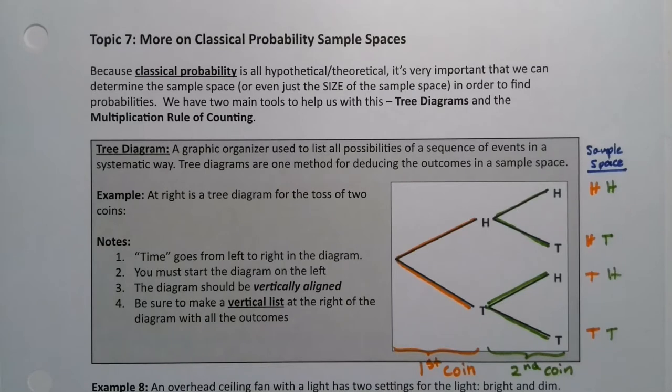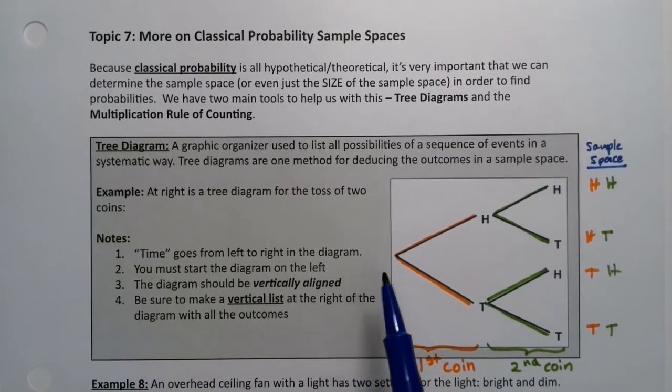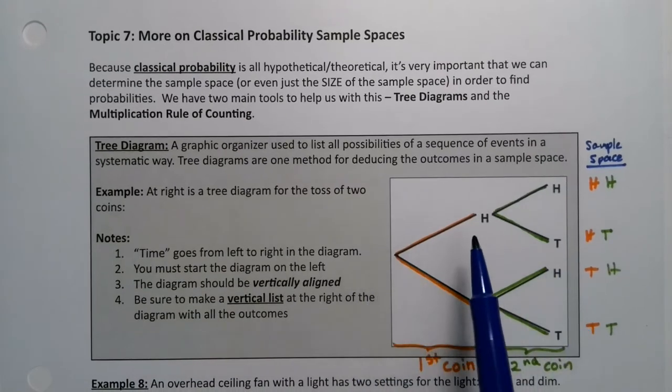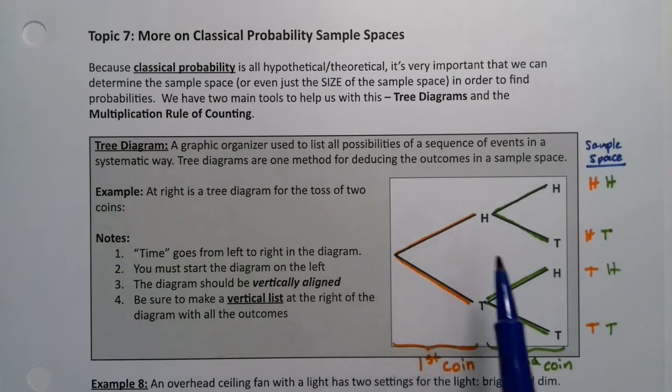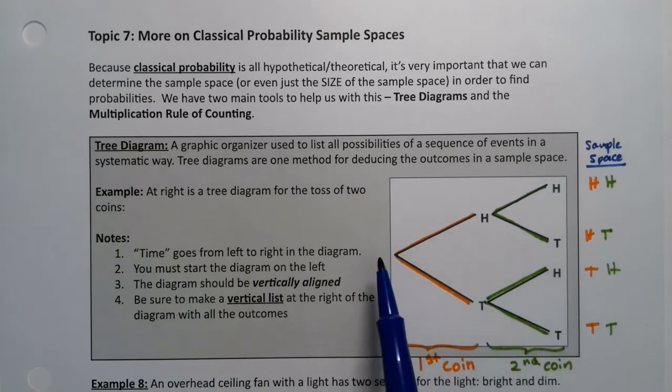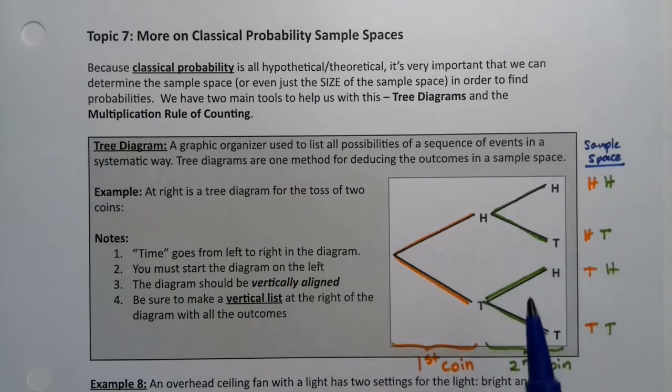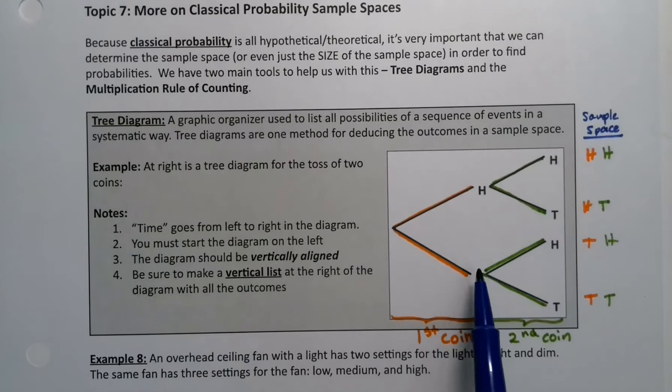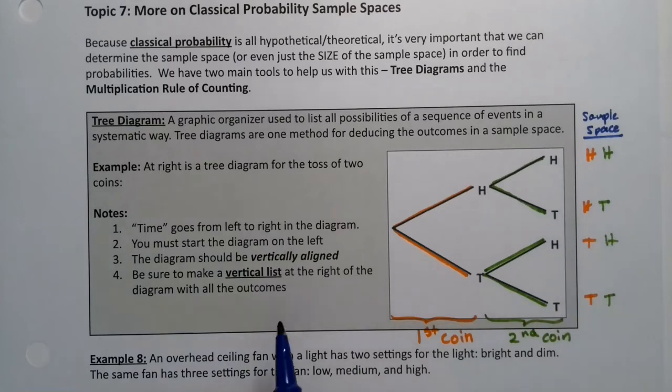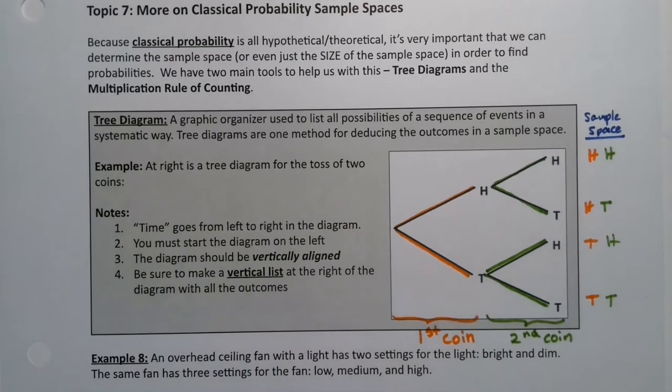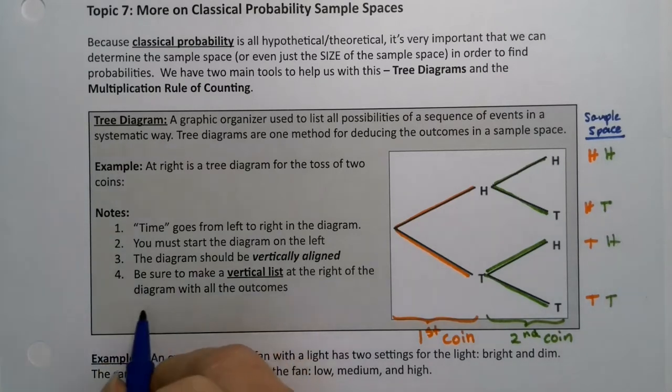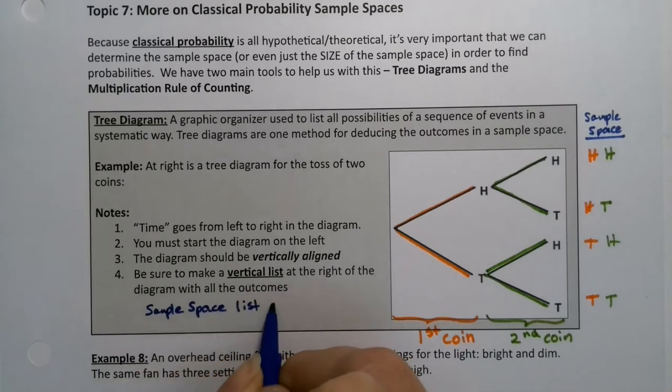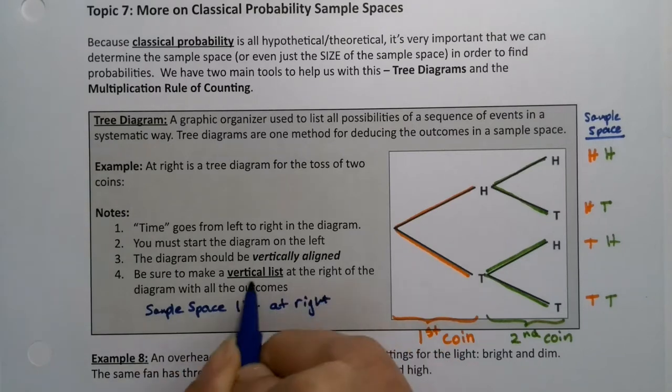And it's all listed out from this organizational method of the tree diagram. So the tree diagram helps me organize how this is gonna look. Now you'll notice time is moving from left to right. So this is the first coin. You toss it first, and then you toss this one second. So you start the diagram on the left and you move to the right. And the diagram should be vertically aligned. See how the H and the T are vertically aligned? And then these H's and T's are vertically aligned. And then you make a vertical list at the right of the diagram with all the outcomes.